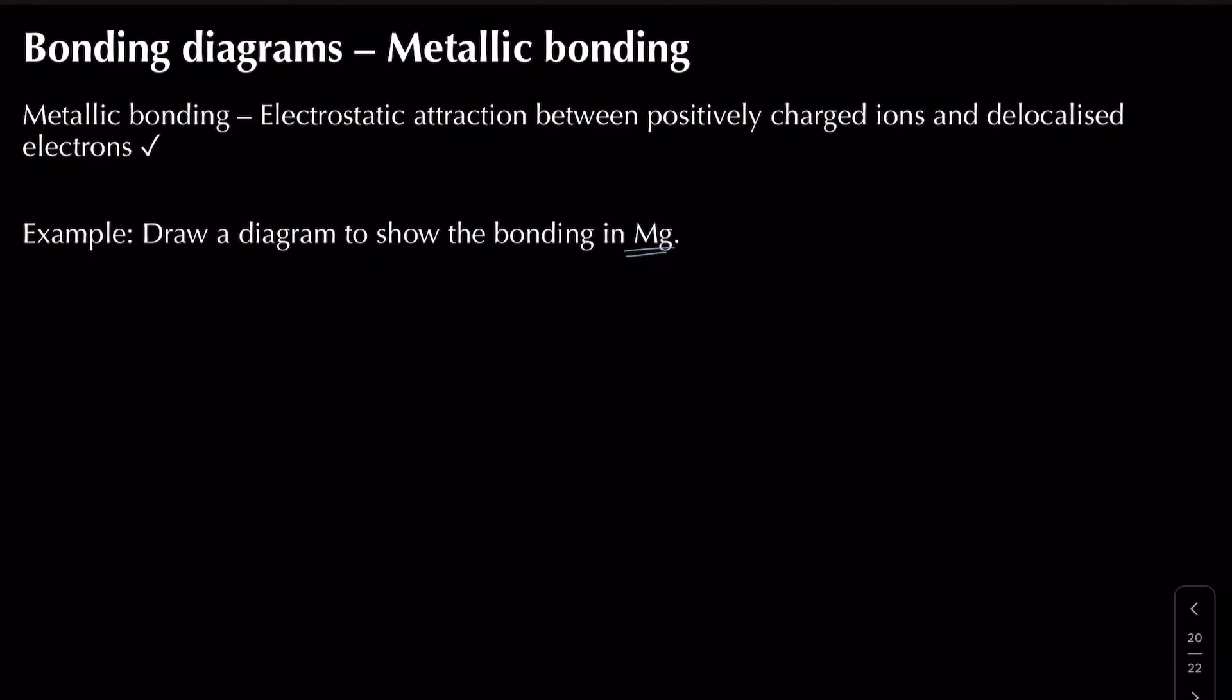In magnesium we've got a giant metallic lattice structure. Magnesium has two electrons in its outer shell because it's in group two, but what actually happens is we're left with magnesium 2+ ions and two delocalised electrons.